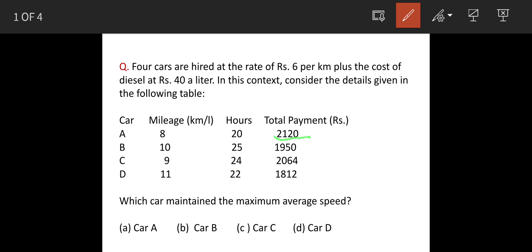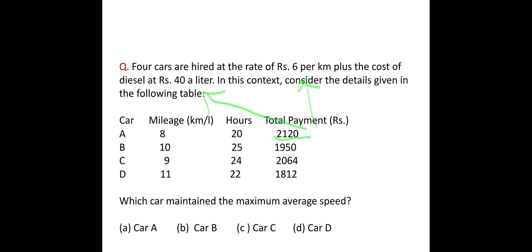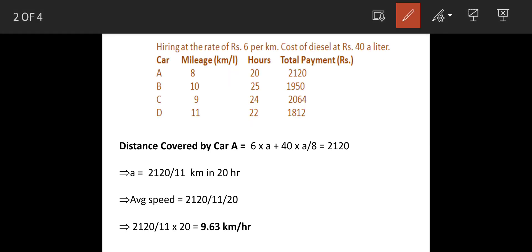Total payment 2120 for car A is actually a function of 6 rupees per kilometer plus cost of diesel at 40 rupees a liter. So we will use this relationship.